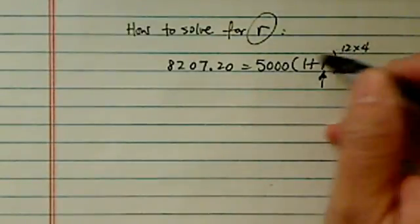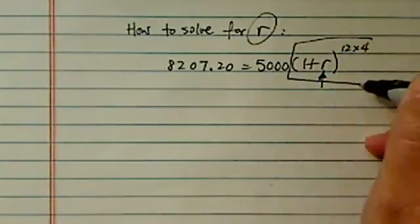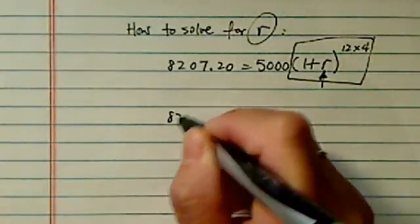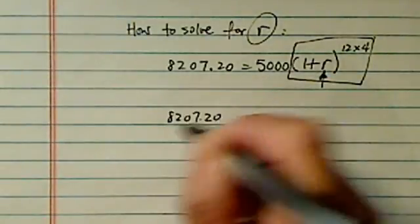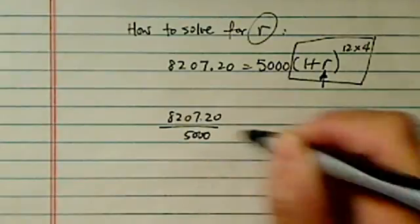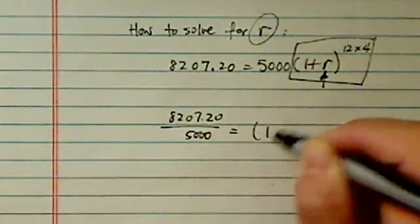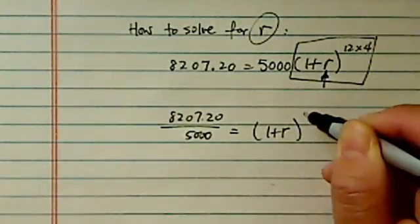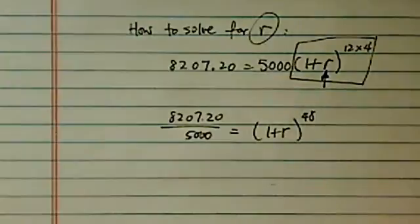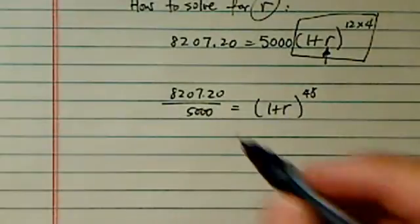First thing I want to do is make sure this side is exponential only. The reason I want to do that is because unless it's exponential by itself, I can't quite take a natural log to get the exponential out. I'm just going to write a 48 over here. Okay, now we're ready to take a natural log.